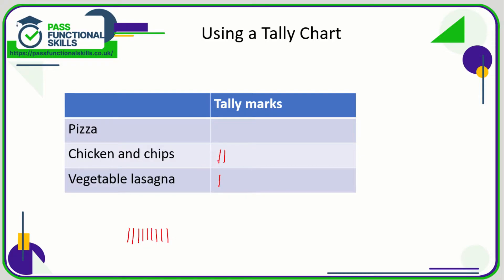So what we do is put them in bunches of five. If the next student you ask wants chicken and chips, and the student after that also wants chicken and chips, and the next one also wants chicken and chips, this will complete a group of five. So rather than doing another vertical strike, we do a diagonal one to bunch it into five. You go around the class, and at the end your tally chart looks something like this.